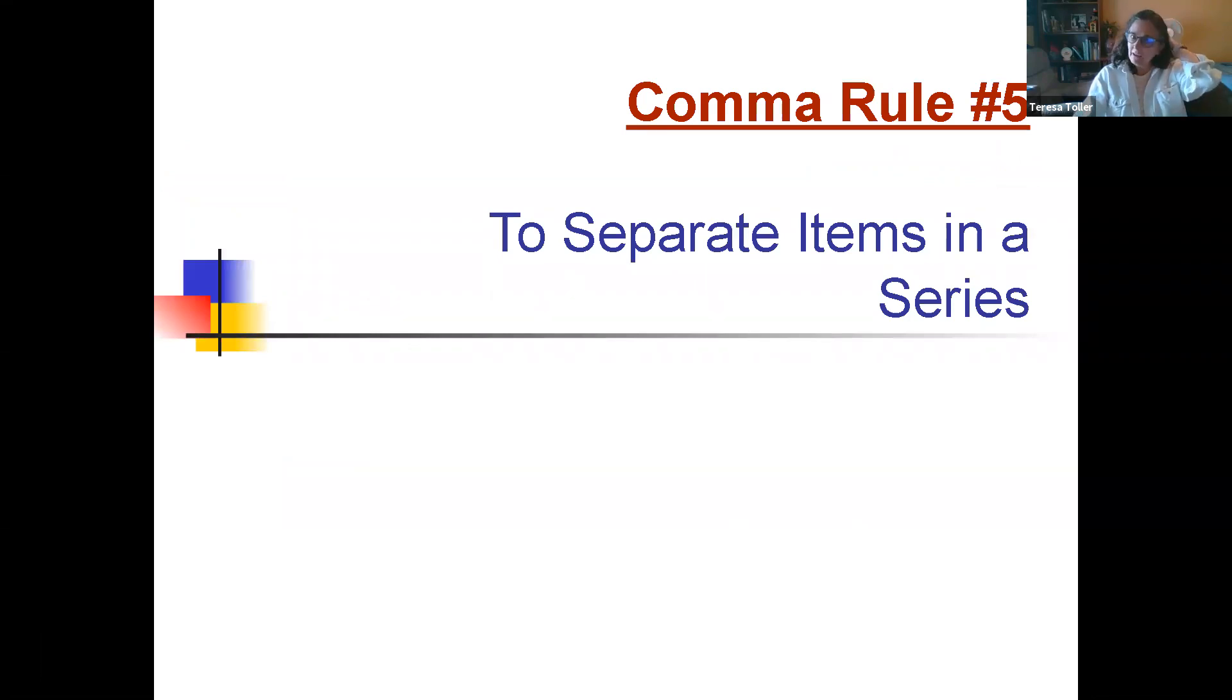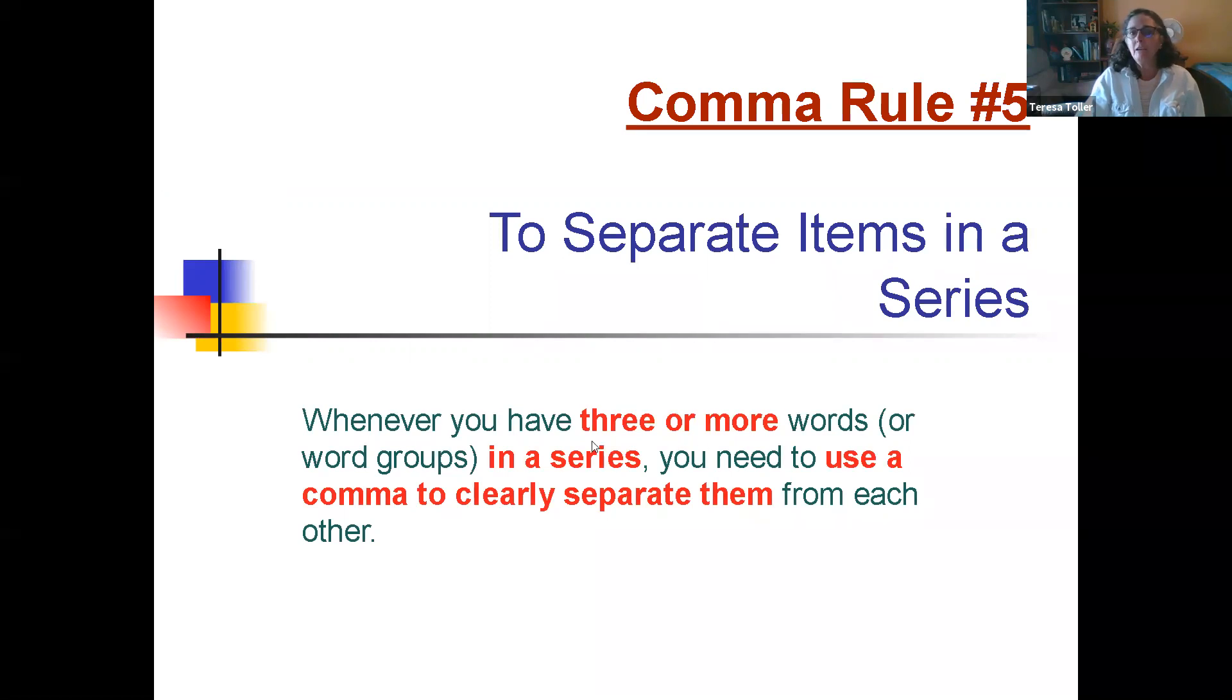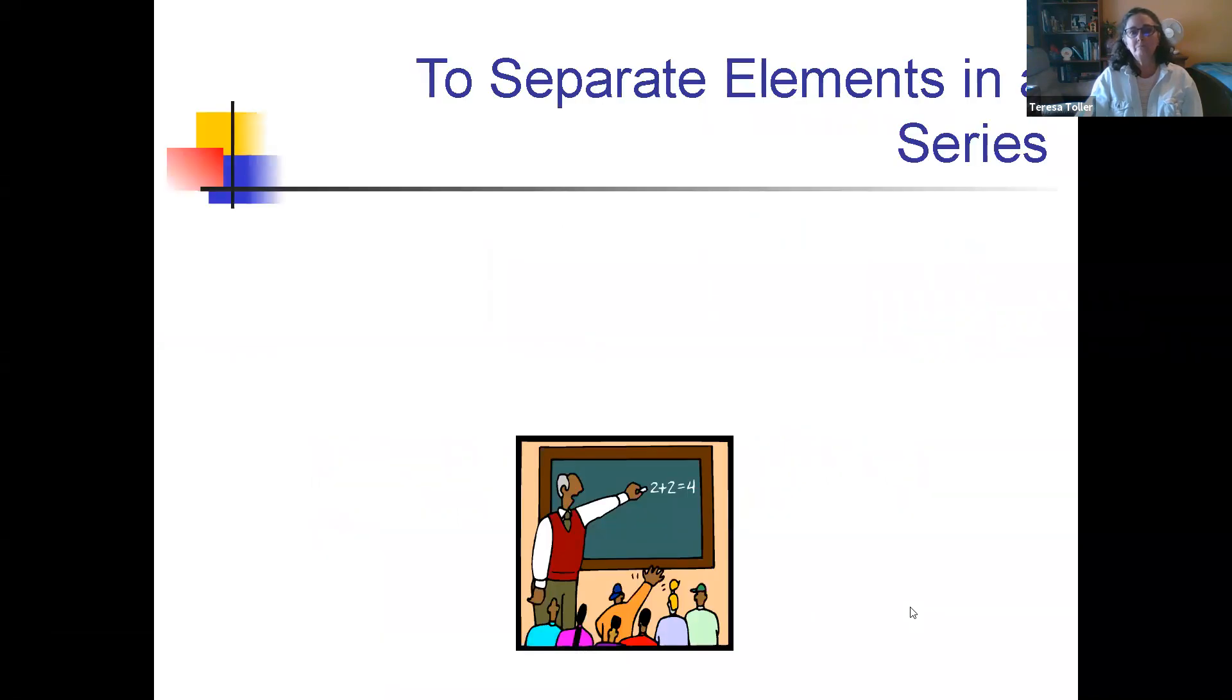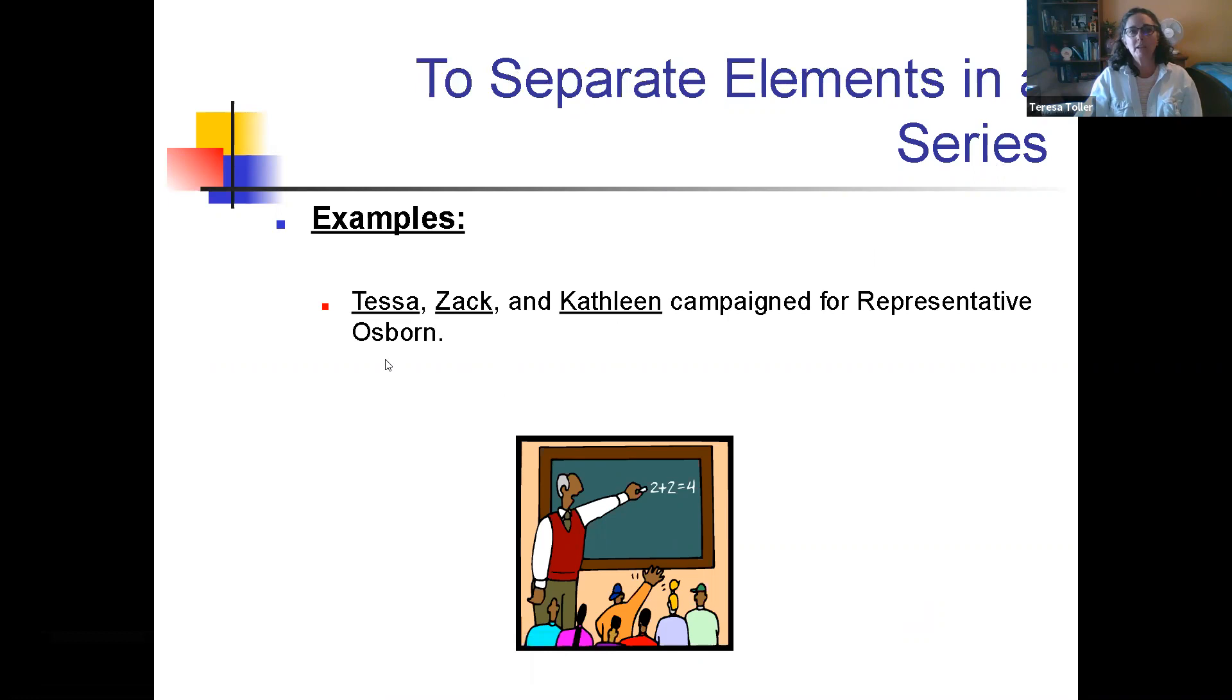Comma rule number five is when you have several different things in a series. Here's the key. You have to have three or more words in the series to use a comma. If you only have two, you do not need a comma between them because you're going to use the word and. Look for the commas: Tessa, Zach, and Kathleen campaign for Representative Osborne. Here's a little confusion. This one, before and, you will see sometimes people do not put that one in there. But is and a FANBOY? So it actually can and should have a comma.